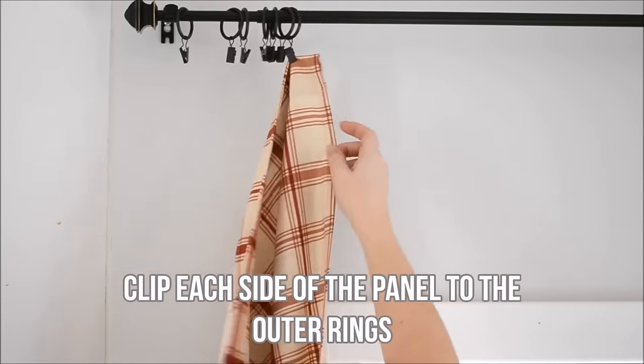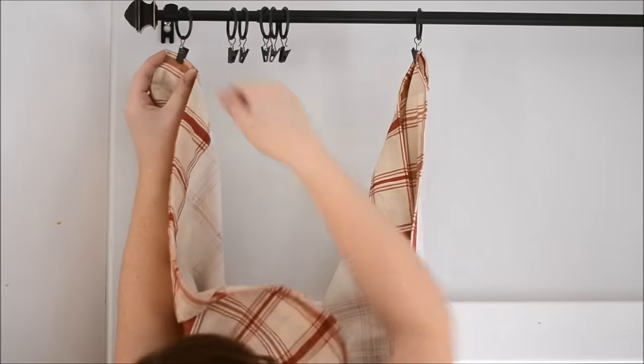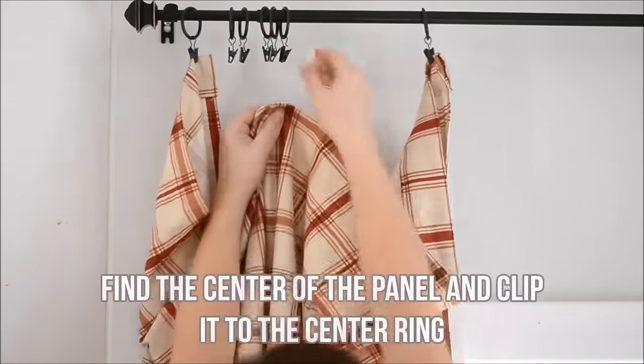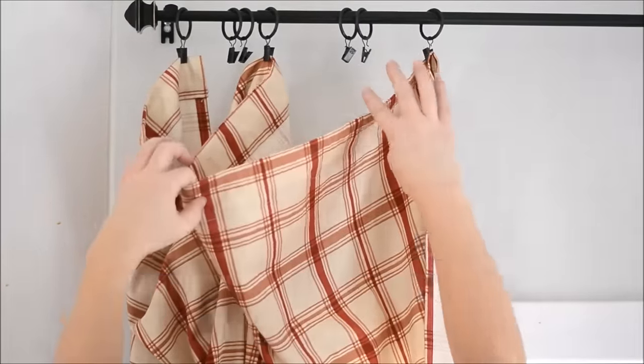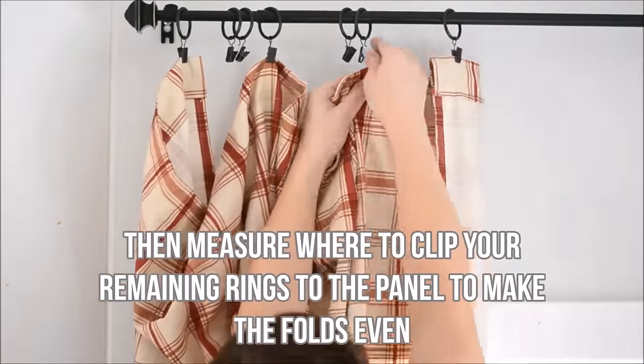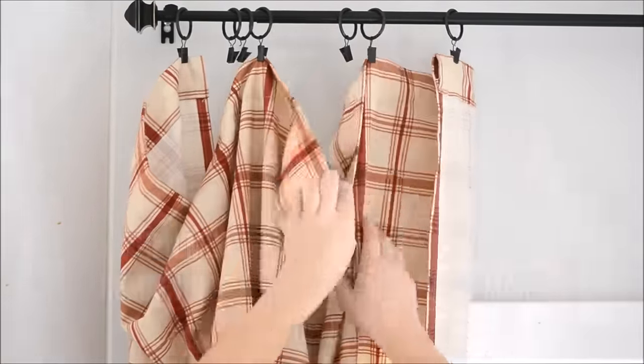So grab your panel and clip each side of it to the outer rings. I usually leave about a half inch on either side of my panel to hang. Then find the center of your panel and clip that to the center ring. And then measure where to clip your remaining rings to the panel to make those folds even.